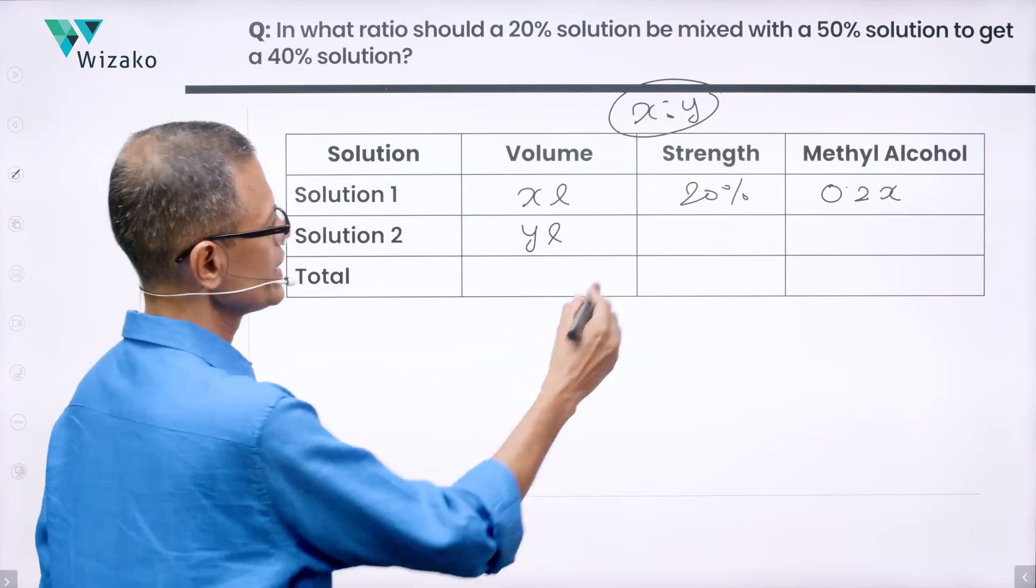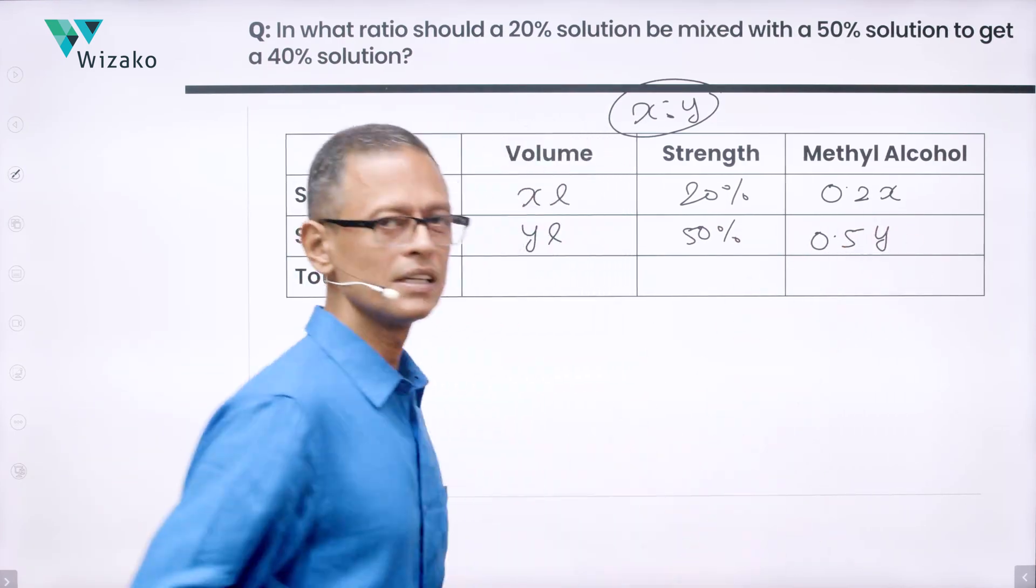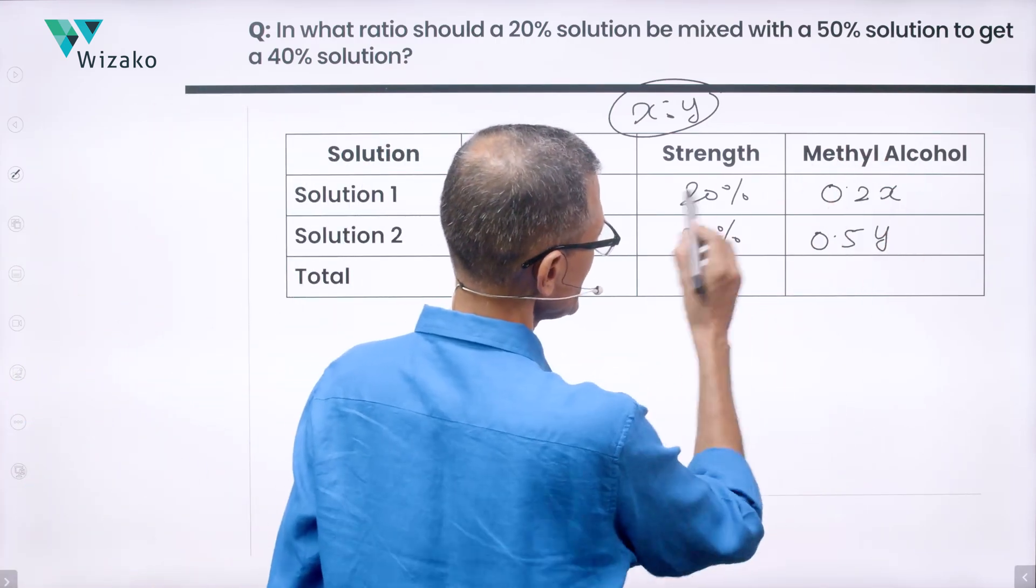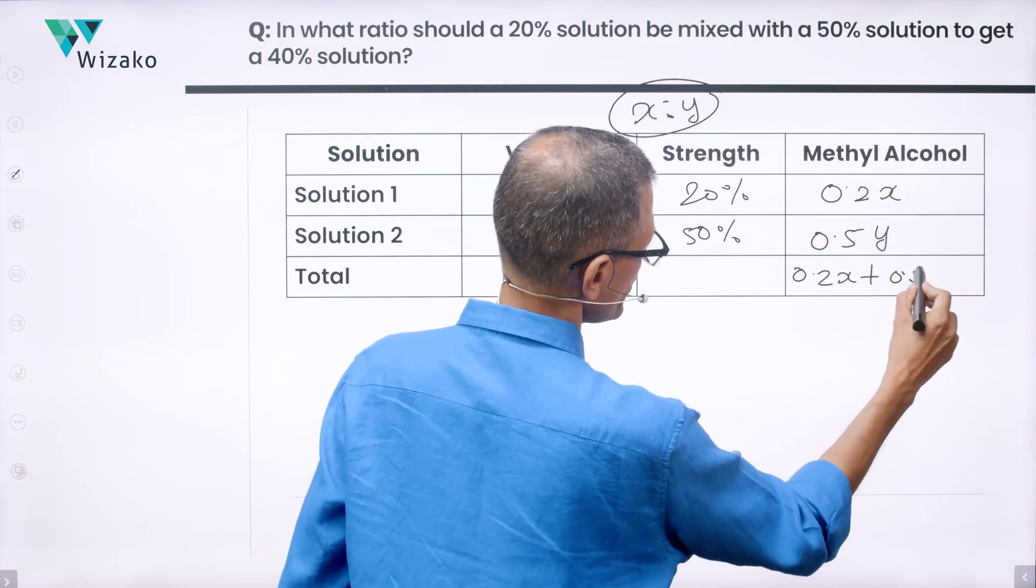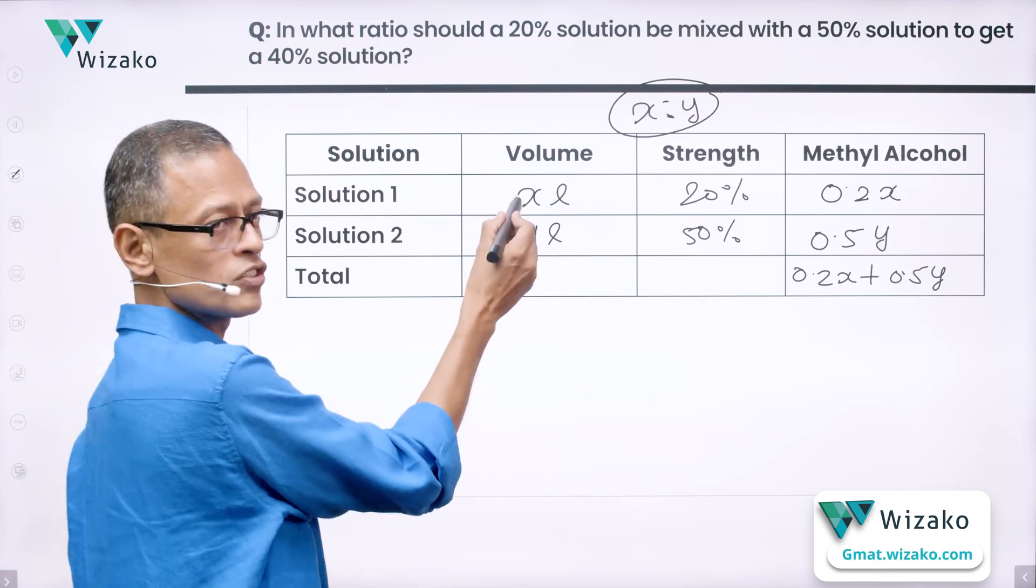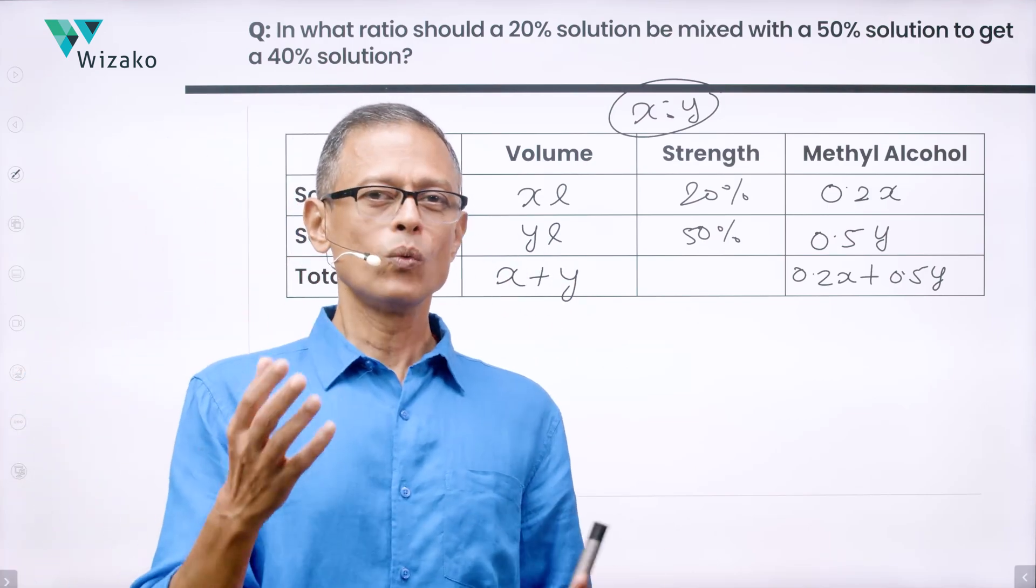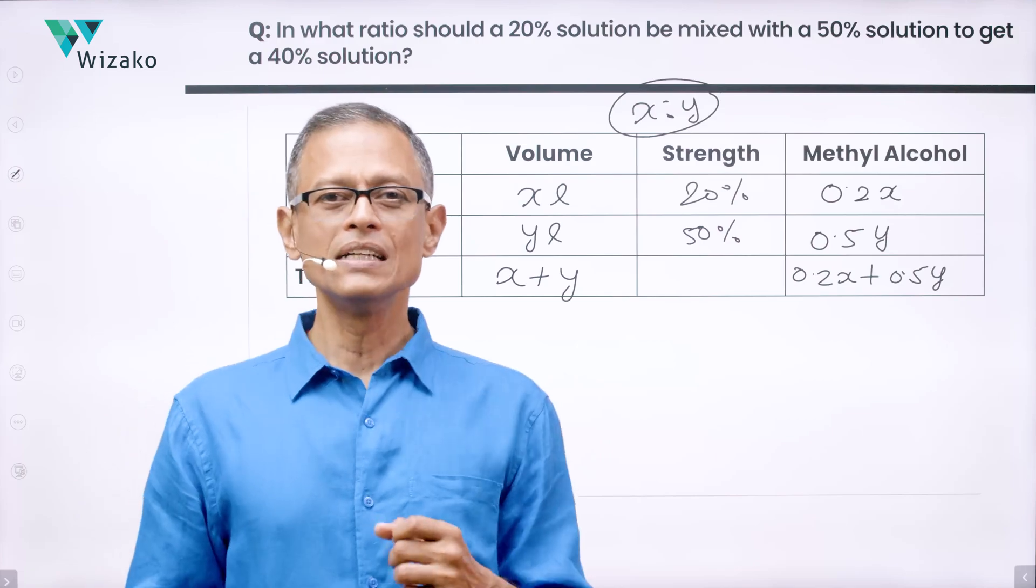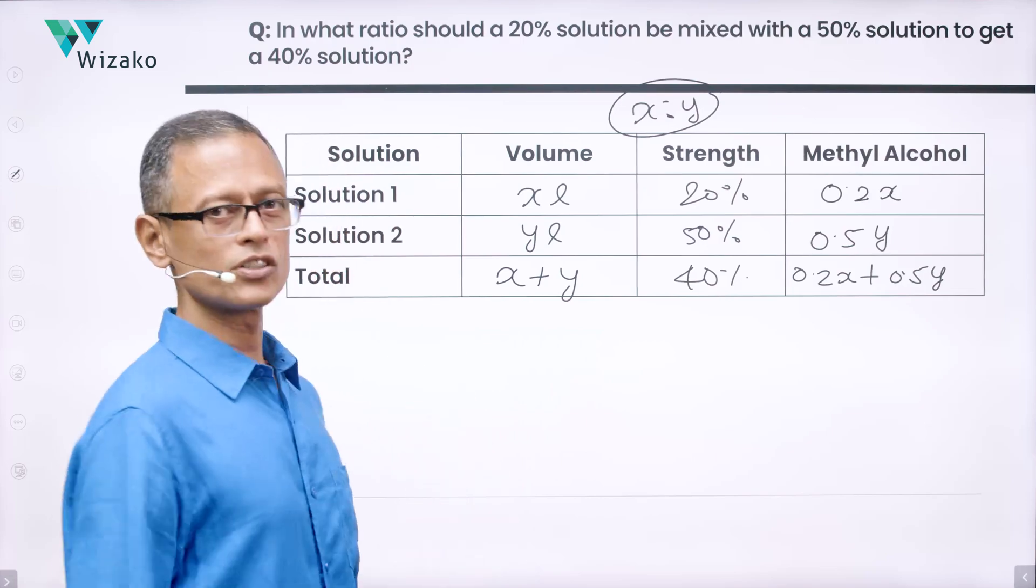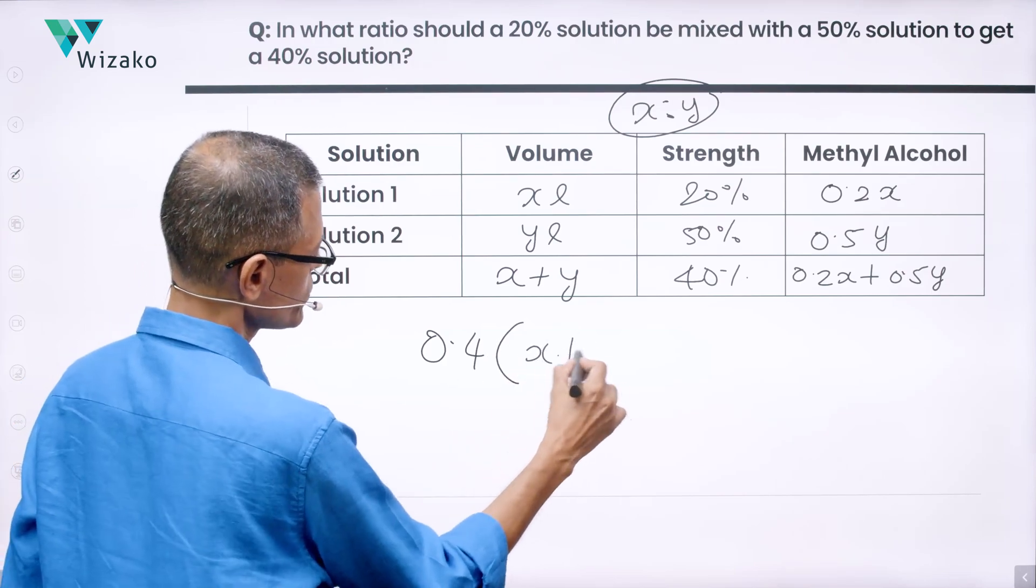Second one, y liters is the volume, strength is 50%. So half of it, which is 0.5 of what volume? Of y liters is the quantum of quantity of methyl alcohol that we have. So how much methyl alcohol do we totally have from the two solutions? 0.2x plus 0.5y from the first one, from the second one. Net-net, what is the total volume we have? x liters is the first solution, y of the second one. So x plus y is the total volume we have. And what do they tell us? They're saying that once you've mixed it in some ratio, this x is to y ratio, the final solution has got 40% methyl alcohol in it. So it's 40% of what? 40% of x plus y. So this final solution is going to have 40 upon 100, which is 0.4 times x plus y. This is the quantity of methyl alcohol.